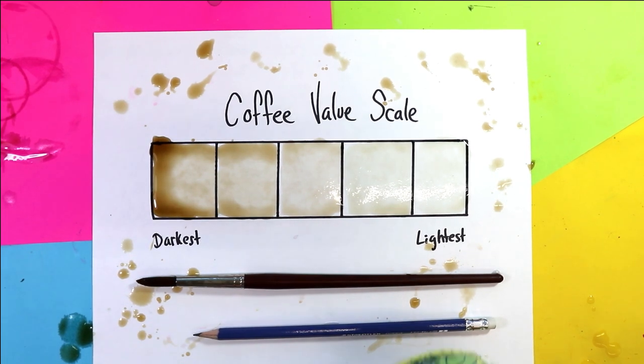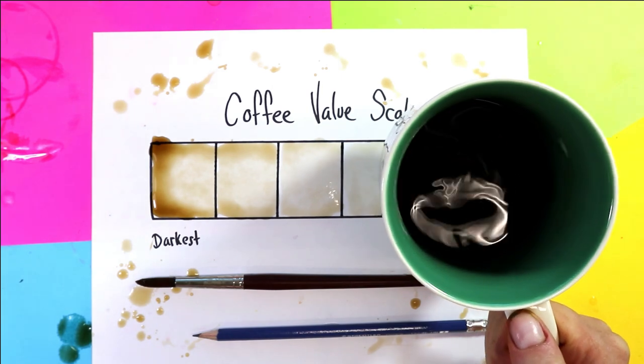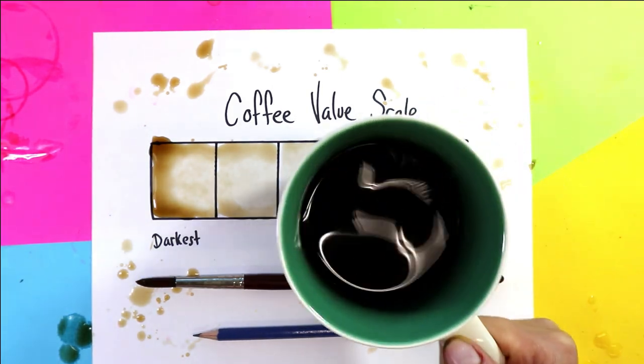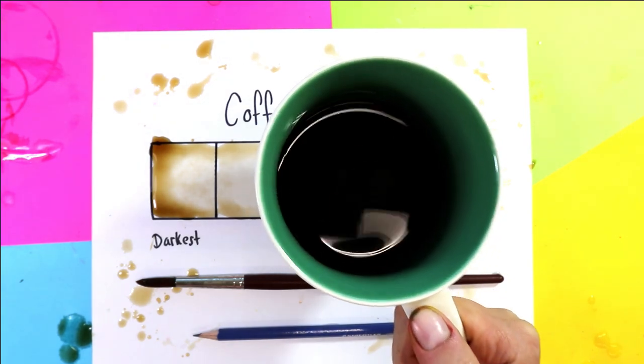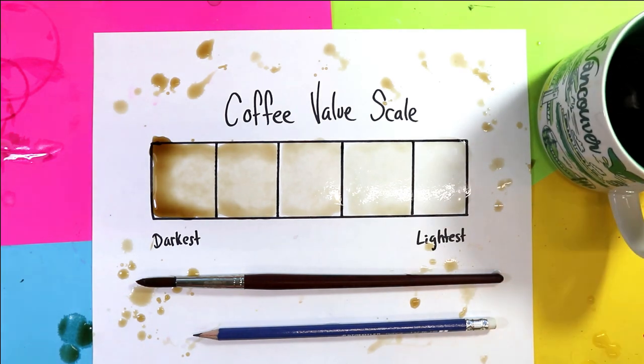Well Artastic Nation, in this episode we're going to experiment creating value scales with some leftover coffee or tea. So find yourself some old coffee in a pot or tea in a mug and let's get started.